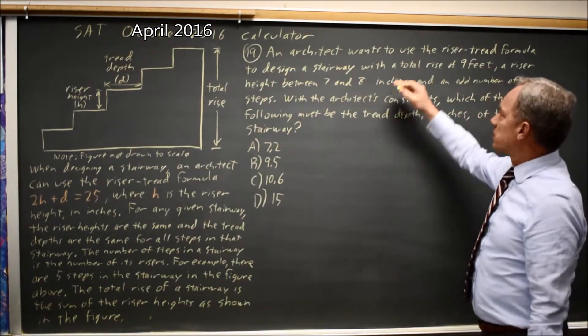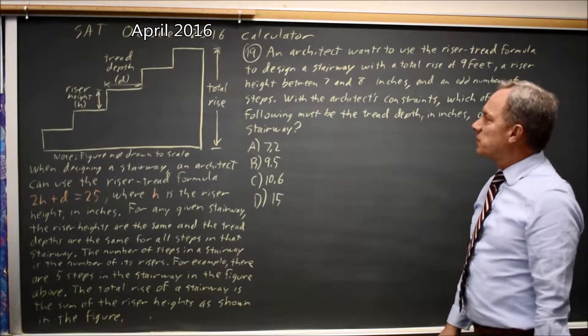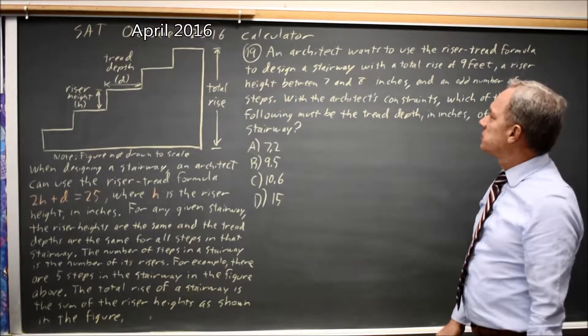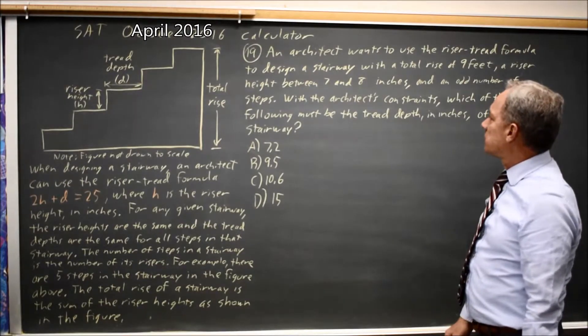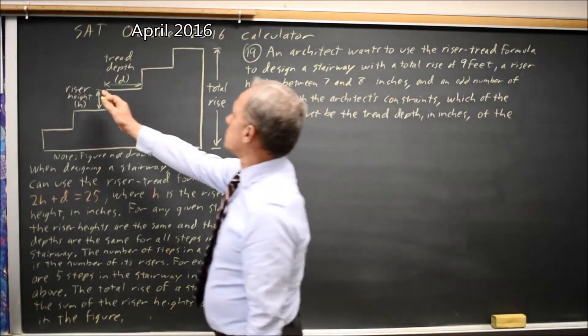The question is: an architect wants to use the riser-tread formula to design a stairwell with a rise of 9 feet, riser height between 7 and 8, and an odd number of steps. Which could be the tread depth, which is this horizontal distance?